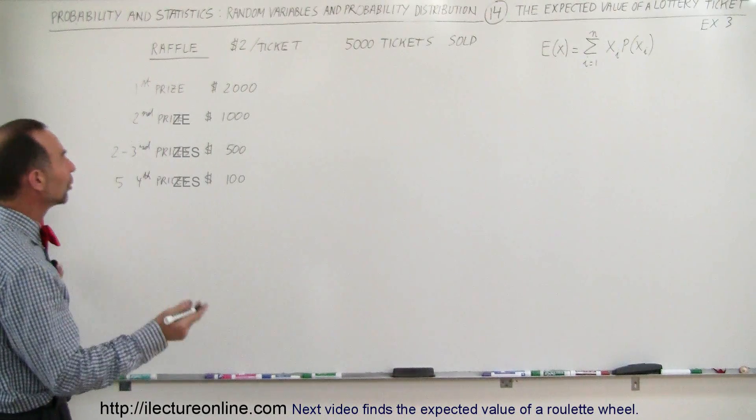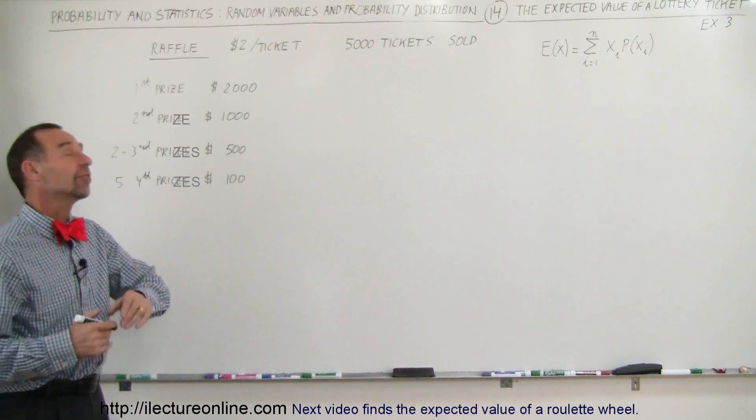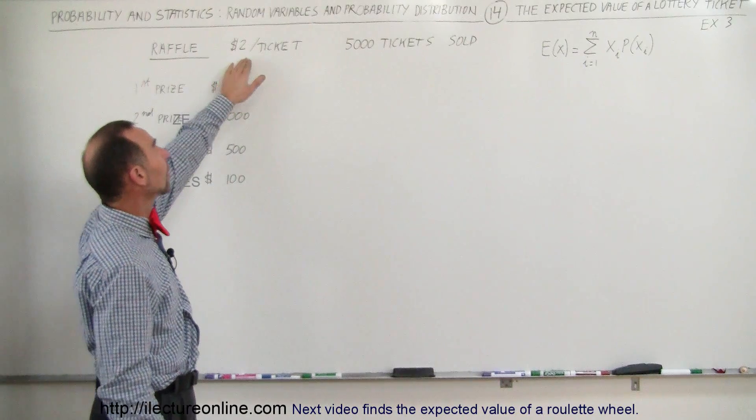So let's say that there's a neighborhood raffle, they're trying to raise some money, they're selling 5,000 tickets and they're sold for $2 each.